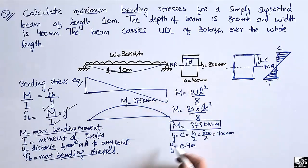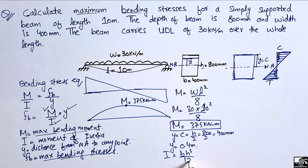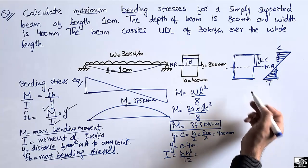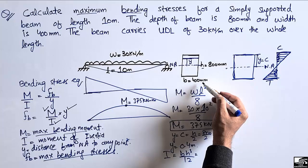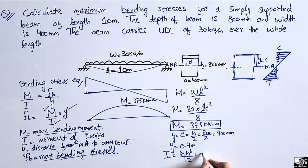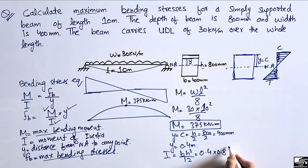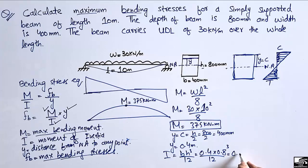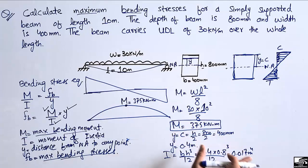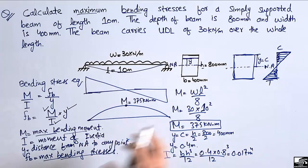Now we find the moment of inertia for this rectangular beam cross-section using the formula I = bh³/12. With b = 400 mm = 0.4 m and h = 800 mm = 0.8 m, dividing by 12 gives a moment of inertia of 0.017 m⁴.